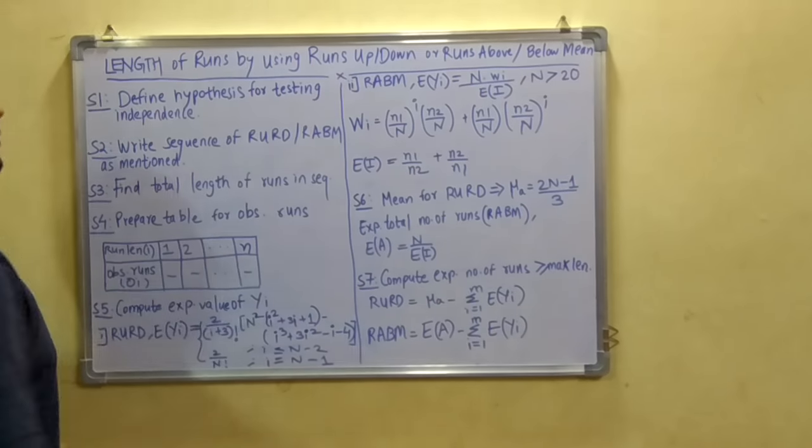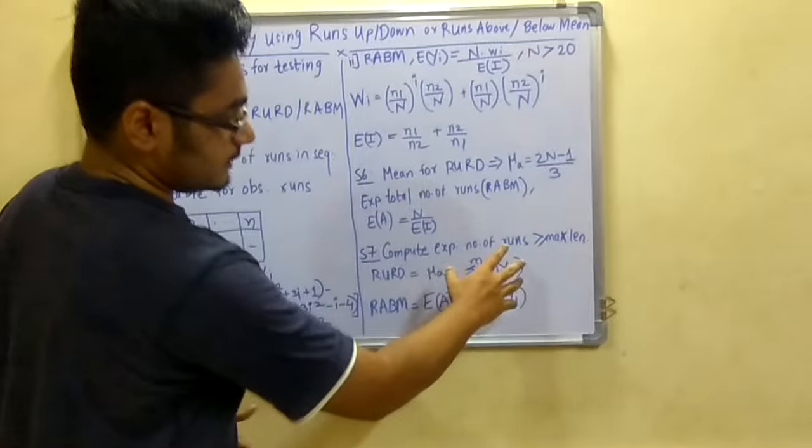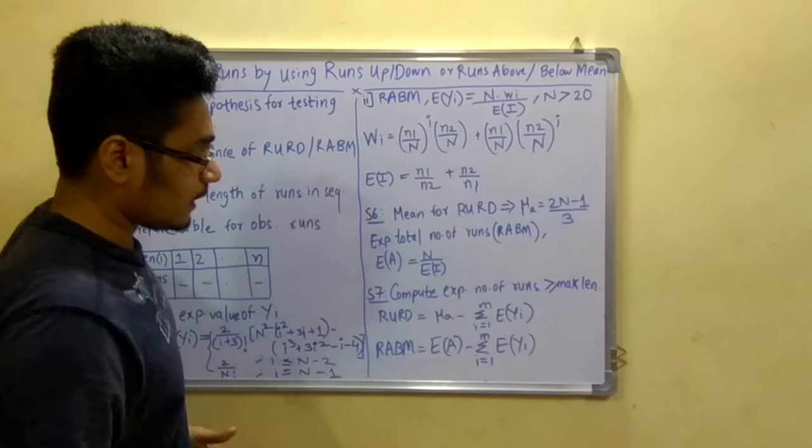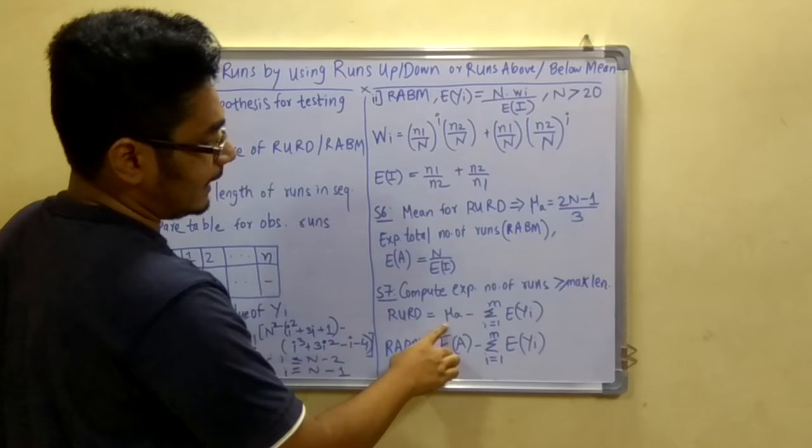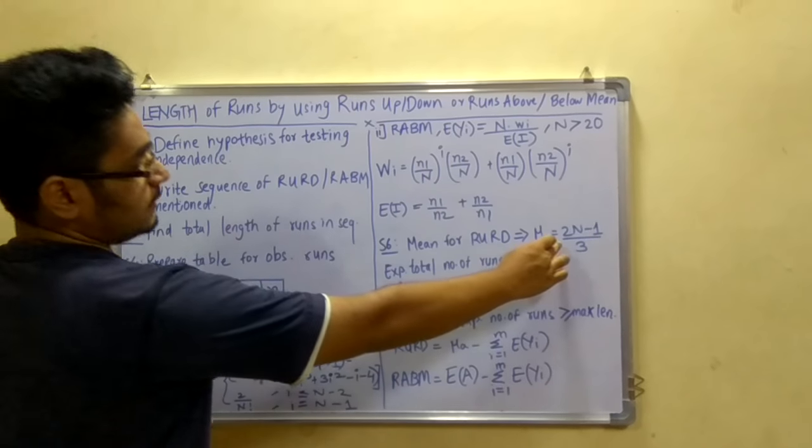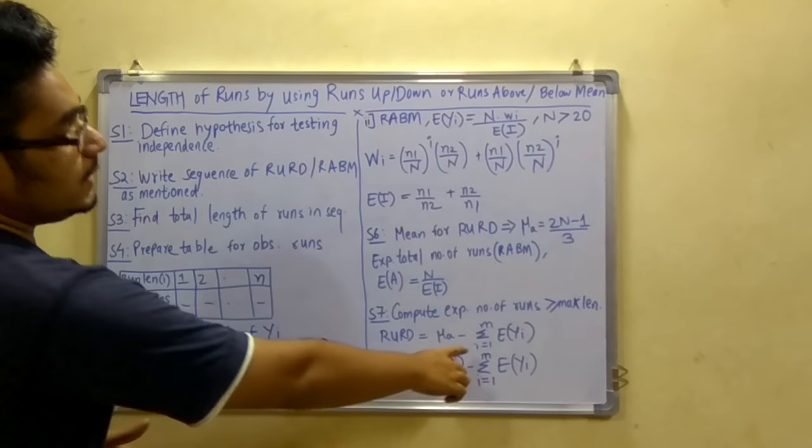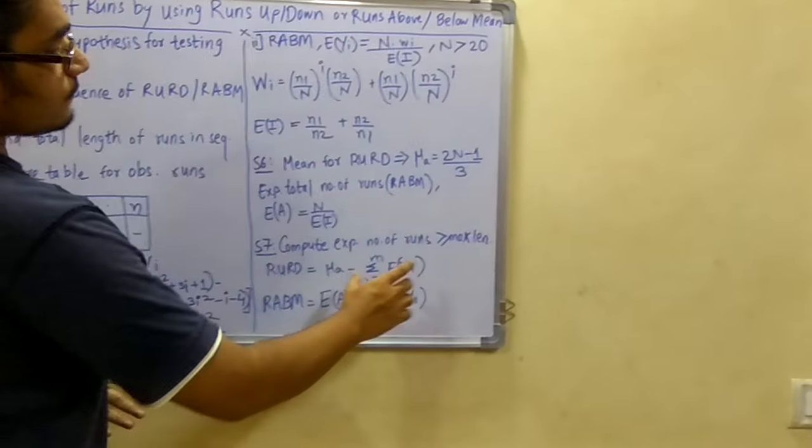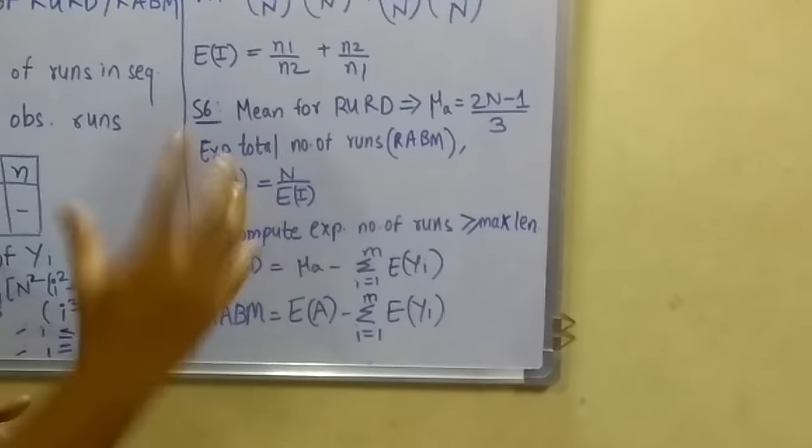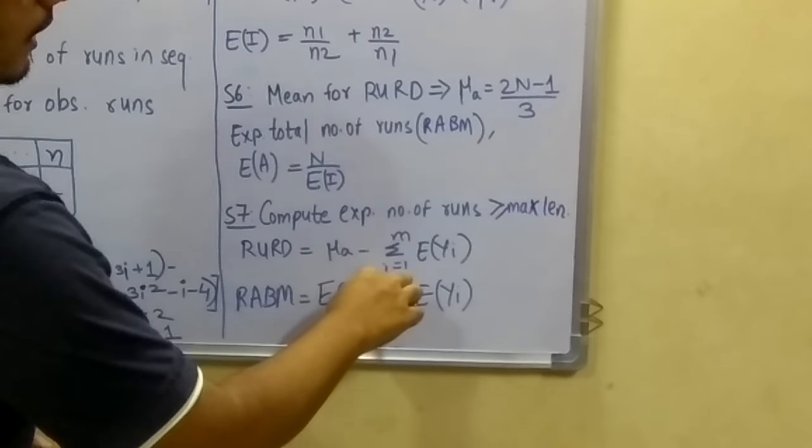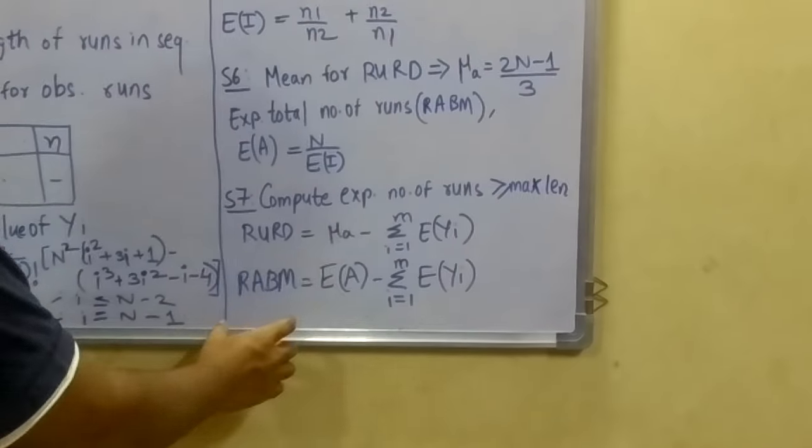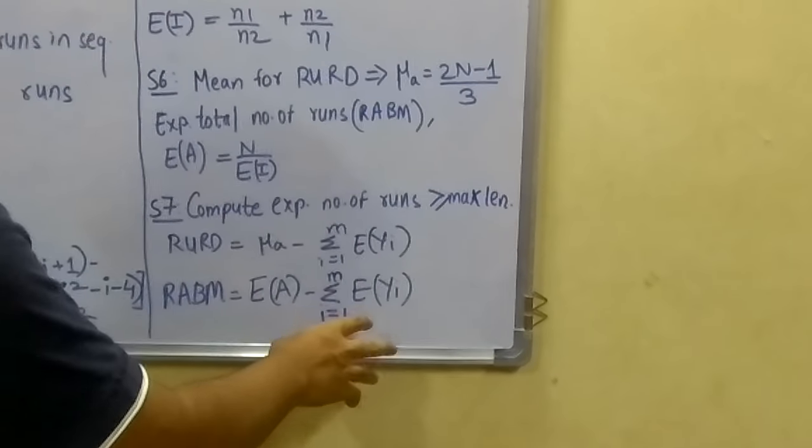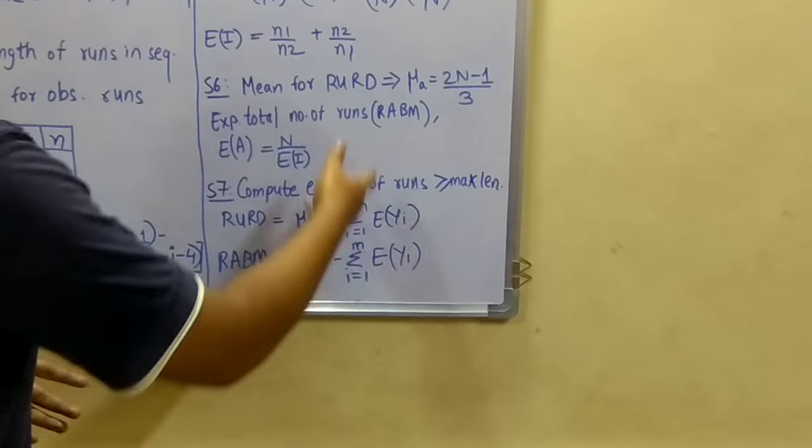After that you have to calculate the expected number of runs greater than the maximum length. This is for both RURD and RABM. For RURD you will calculate it as μa (that is this mean) minus summation of E(yi). Now here i runs from 1 to m. m stands for the total maximum number of lengths that is available. If it is 4, it will run from i = 1 to 4. Simple. For RABM it is EA minus summation i from 1 to m of E(yi). For m here also remains the same.